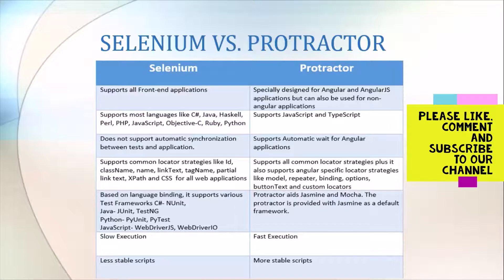The last difference is that Protractor has more stable scripts. Selenium sometimes may not be so stable, and there's a lot of maintenance required with Selenium automation. But Protractor doesn't require so much maintenance. The scripts are more stable. You don't need to include different mechanisms to synchronize your application with your scripts.